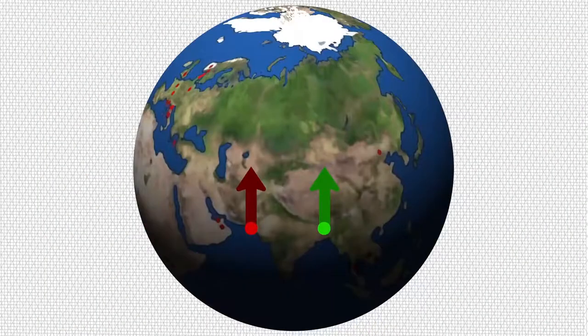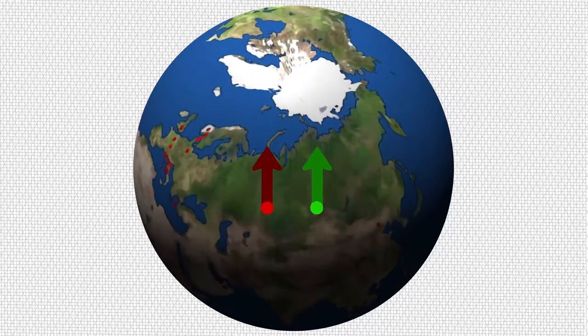This is like the case of the two people on earth who also traveled in straight lines but on a curved surface and so they met. Hence, the two apples meet in the exact same way as the people did in curved space time.